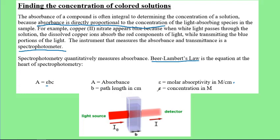B is the path length — that's how wide the cuvette or test tube is, typically measured in centimeters. The cuvette is placed inside the machine and a light is shined through the sample. If more light is absorbed, that means it must have been a higher concentration, so the detector will detect less light. The higher the absorbance, the higher the concentration, because absorbance is directly proportional to concentration.